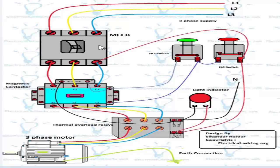In the diagram, I shown the MCCB circuit breaker, magnetic contactor, thermal overload relay, three phase motor, light indicator, normally open push button switch and normally close push button switch, and the wiring connection.